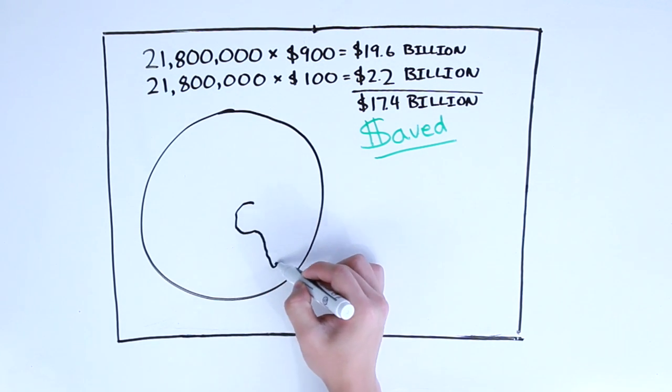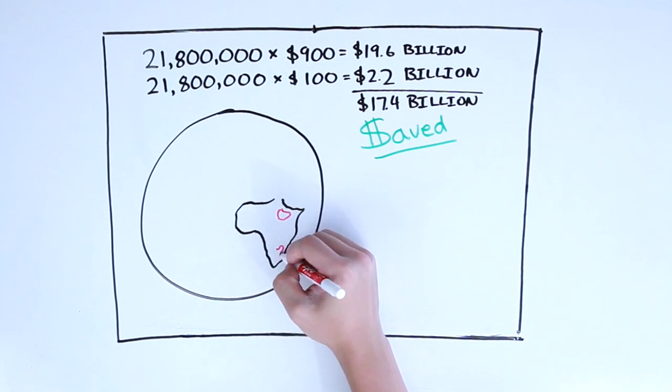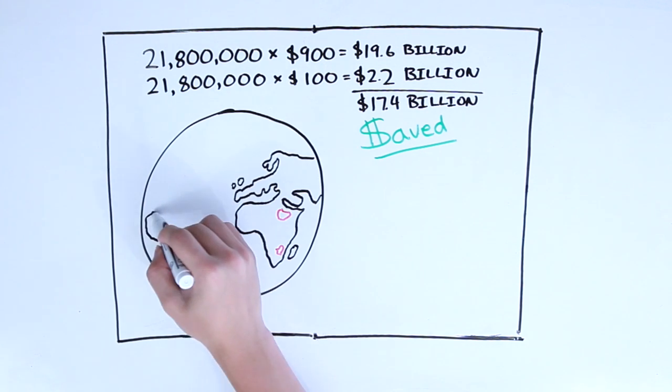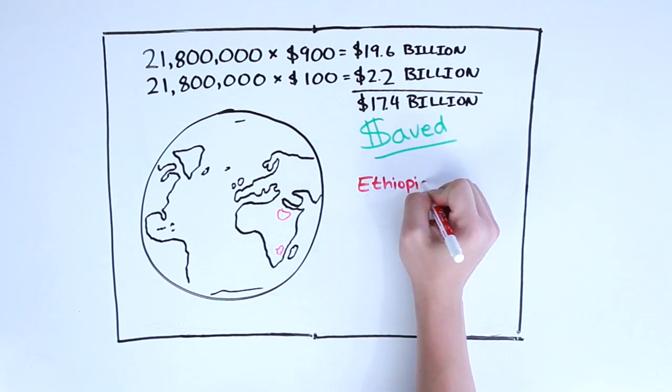But if students could buy all their books digitally at our price of $10, they would only spend $2.2 billion. That's $17.4 billion saved, which is enough money to settle the national debts of Ethiopia and Zimbabwe.